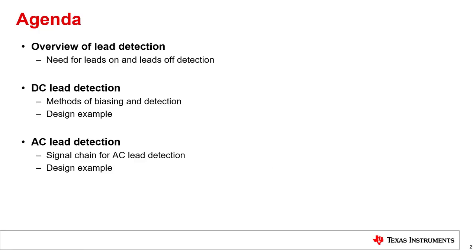We will start with an overview of lead detection, beginning with the motivation to detect leads-on and leads-off conditions. Next, we will talk about DC lead detection, showing the ways to bias the leads to detect leads-on and leads-off conditions, and show a design example. We will then present the principle of operation of AC lead detection and give a design example to illustrate how AC lead detection works.